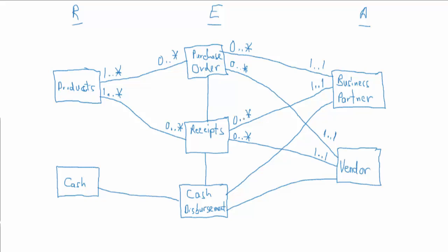For cash disbursements, each cash disbursement will be made out of one and only one bank account, but each bank account may be associated with zero up to many cash disbursements — we may have bank accounts we never make disbursements from. Each cash disbursement will also be made to one and only one vendor, and each cash disbursement will be associated with one and only one business partner. A business partner may initiate zero up to many cash disbursements over time, and a vendor may receive cash disbursements zero to many times.